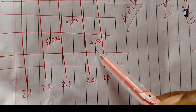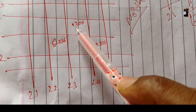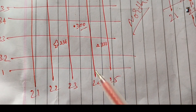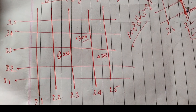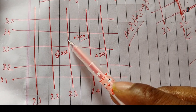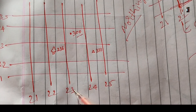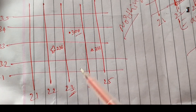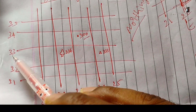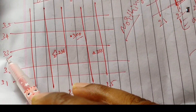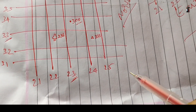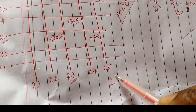Let's try an example. Suppose we want to find the grid reference for spot height 300. First, find the vertical line to the left of the symbol — here it is 23. Next, find the horizontal line below the square or symbol — that is 33. So the four-figure grid reference is 23-33.